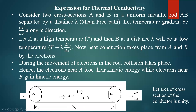Consider two cross-sections A and B of the conductor. One end is A, another end is B, in a uniform metallic rod AB separated by distance lambda. End A and end B are separated by lambda, where lambda is the mean free path of the electron. Let the temperature gradient be dT/dx along the x direction.